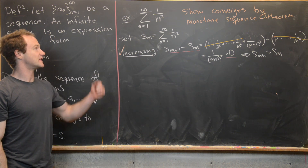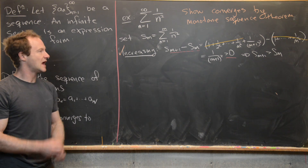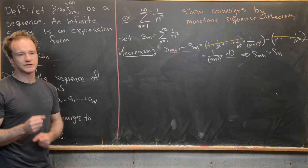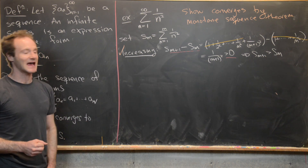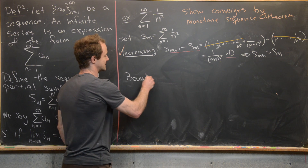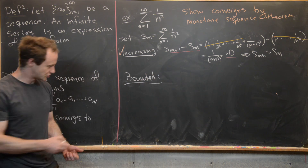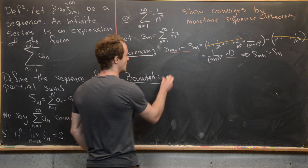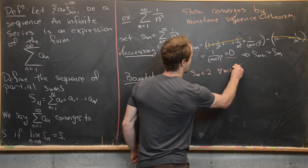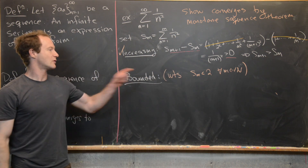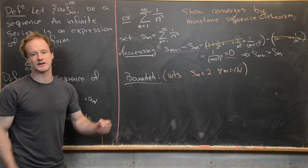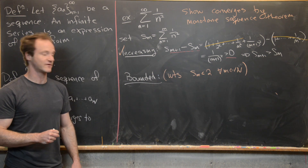Now let's show that the sequence of partial sums is bounded. You might want to play around with some numbers — calculate this for m equals 1 through 10 to get a guess for what it should be bounded by. What we'll show is that it's bounded by 2, because that's maybe the easiest to work with. So what we want to show is that S_m is less than 2 for all natural numbers m. We only need to show it's bounded above because we just showed it was increasing, so it's automatically bounded below by the very first term.